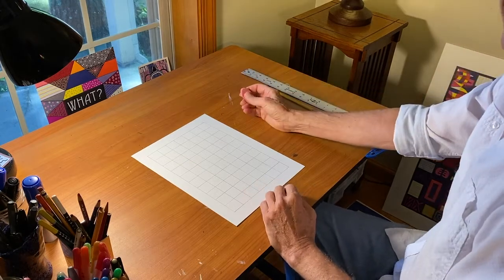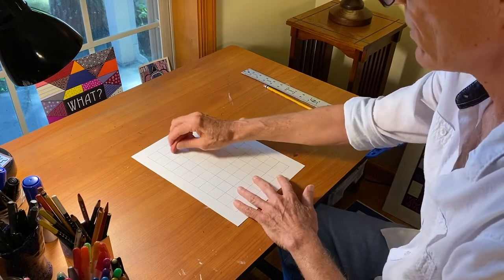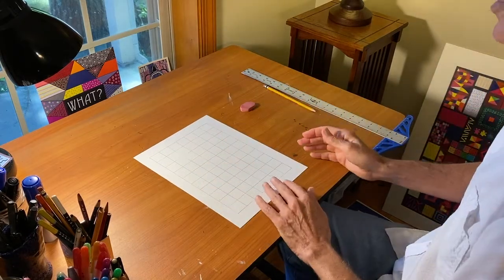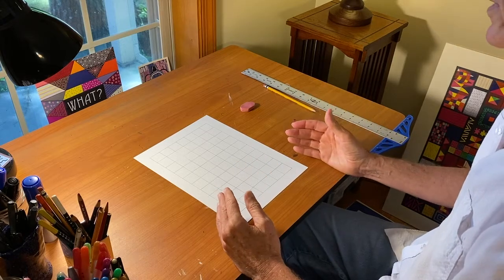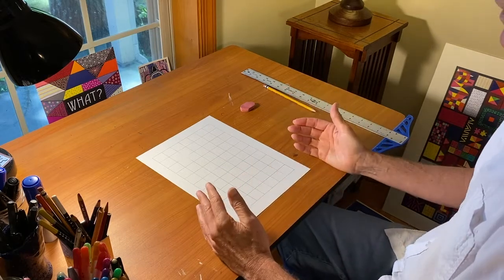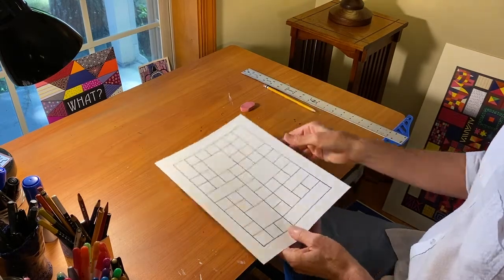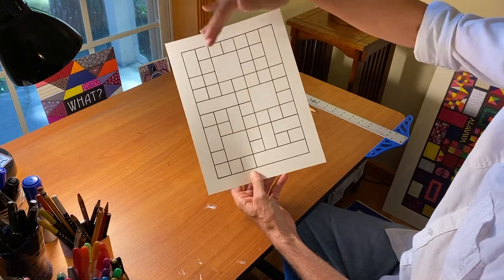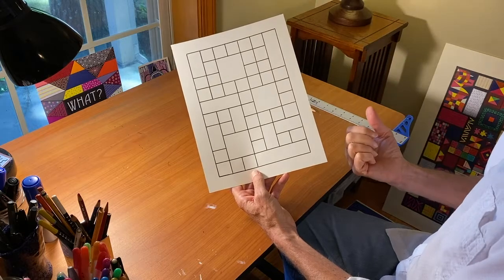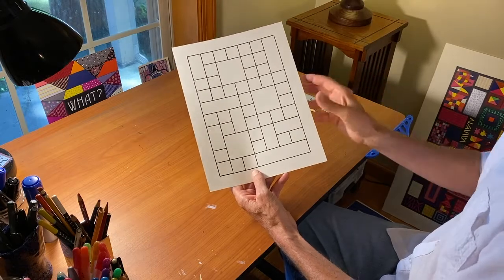Once I have my grid laid out, the next step is to take an eraser and begin erasing some of the lines. What I wind up doing is creating a series of larger squares and rectangles that might be two, three, or four squares wide or long, to break up the monotony of the grid. So I wind up with something that looks more like this — some squares and some rectangles of different lengths. Then once I'm satisfied with the structure, I will take a marker and go over the lines to give me a structure within which to work.